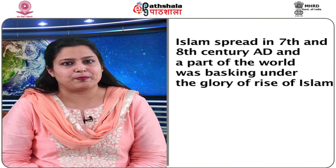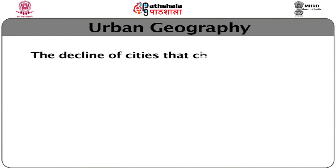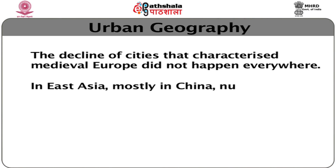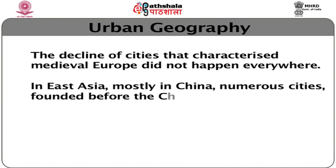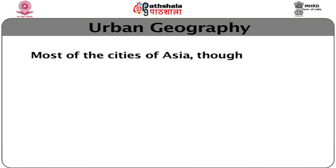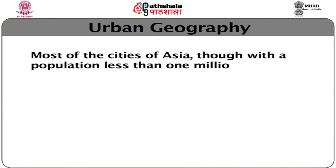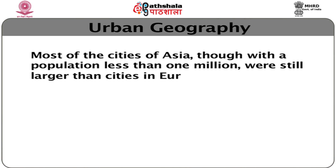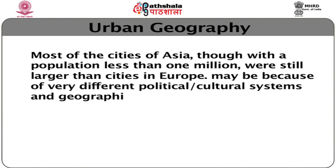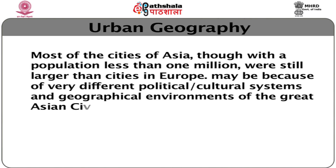Islam spread in the 7th and 8th century AD and a part of the world was basking under the glory of the rise of Islam. The decline of cities that characterised medieval Europe did not happen everywhere. In East Asia, mostly in China, numerous cities founded before the Christian era remained inhabited and economically viable. Most cities of Asia, though with a population less than 1 million, were still larger than cities in Europe, perhaps because of very different political, cultural systems and geographical environments of the great Asian civilisation.